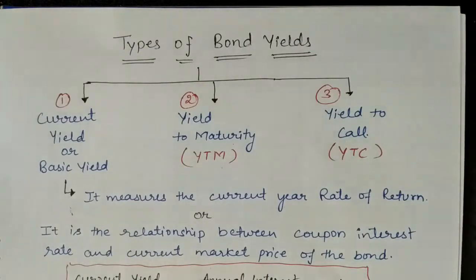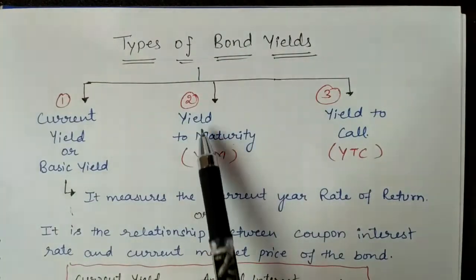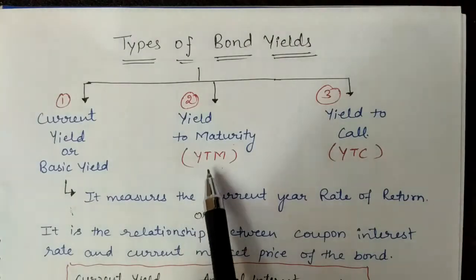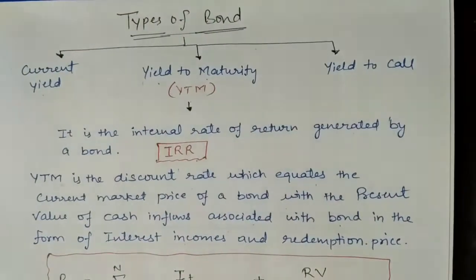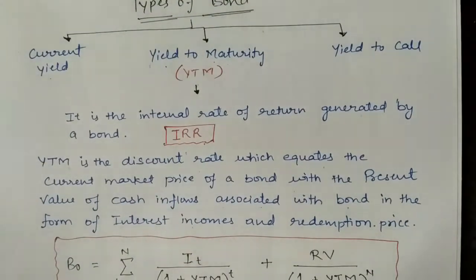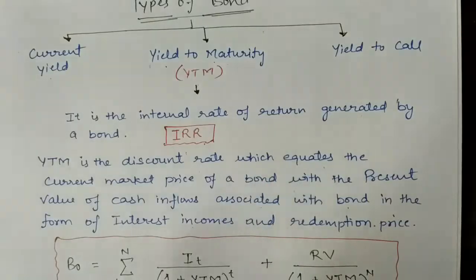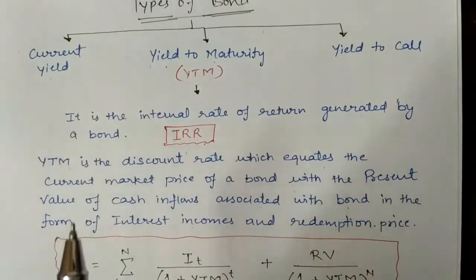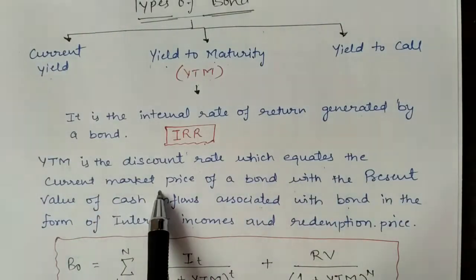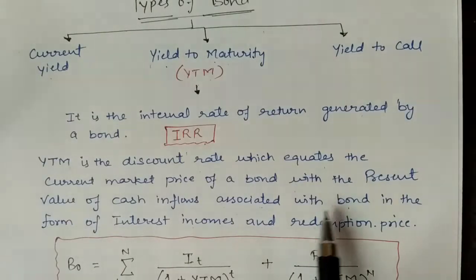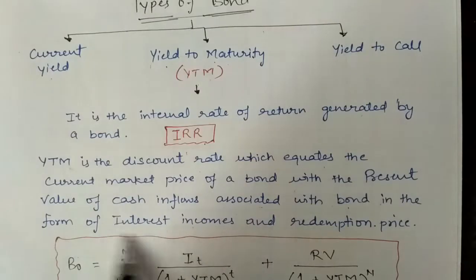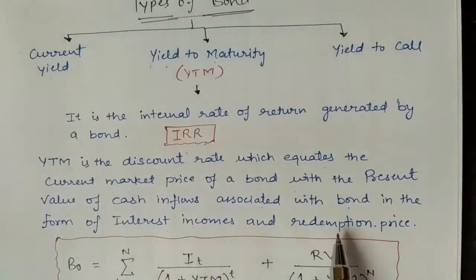Moving on to our next topic in types of bond yield: Yield to Maturity, popularly known as YTM. It is the internal rate of return generated by the bond, which we have already discussed in financial management under capital budgeting. It is the return earned if the bond is purchased today at the market price and held by the investor till maturity. It is the discount rate which equates the current market price of a bond with the present value of cash inflows — interest income earned annually and the redemption price earned at maturity.